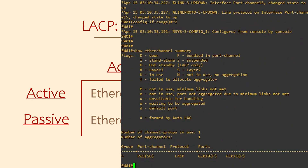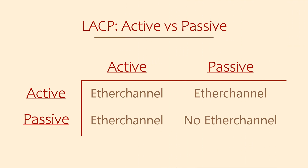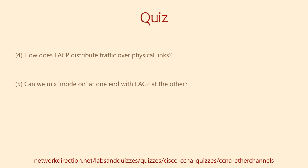I recommend using LACP active mode wherever possible. However, you will find occasions when you want to configure a LAG or an EtherChannel to a device that doesn't support LACP. In that case, a manual EtherChannel is your only option. There are a couple of tricky questions this time — you may find question 4 to be particularly tricky.